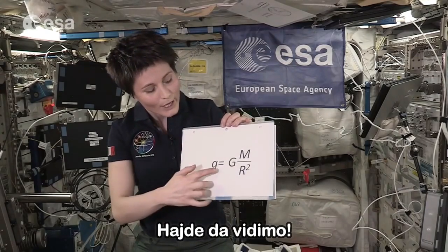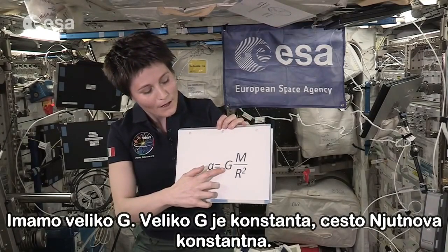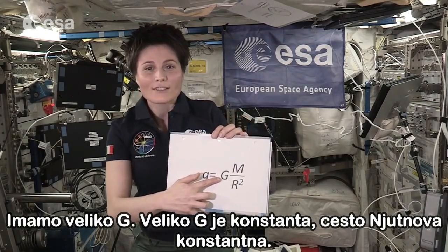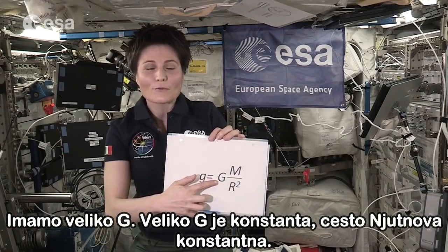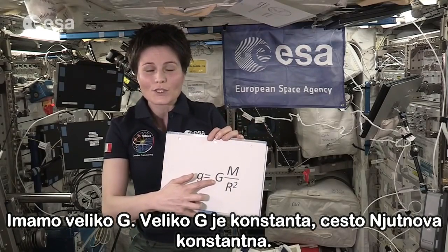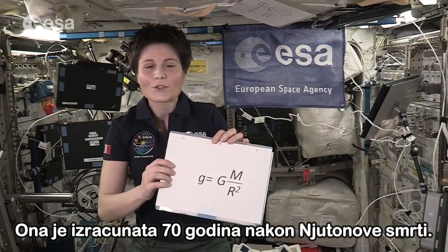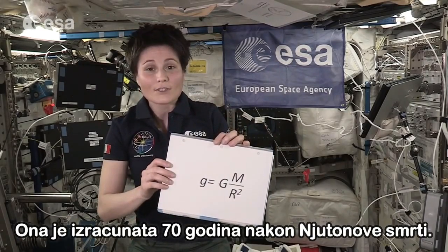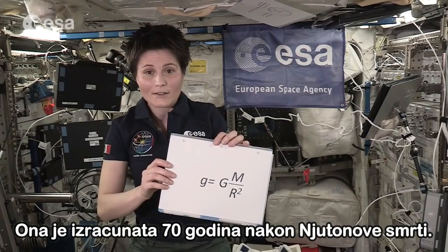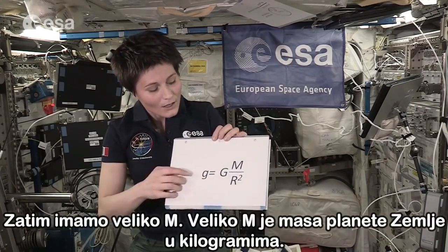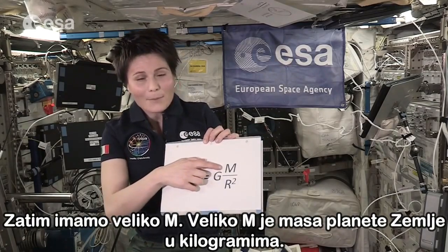So let's see. We have big G. Big G is a constant, often referred to as Newton's constant, although actually it was determined 70 years after Isaac Newton's death by Henry Cavendish.